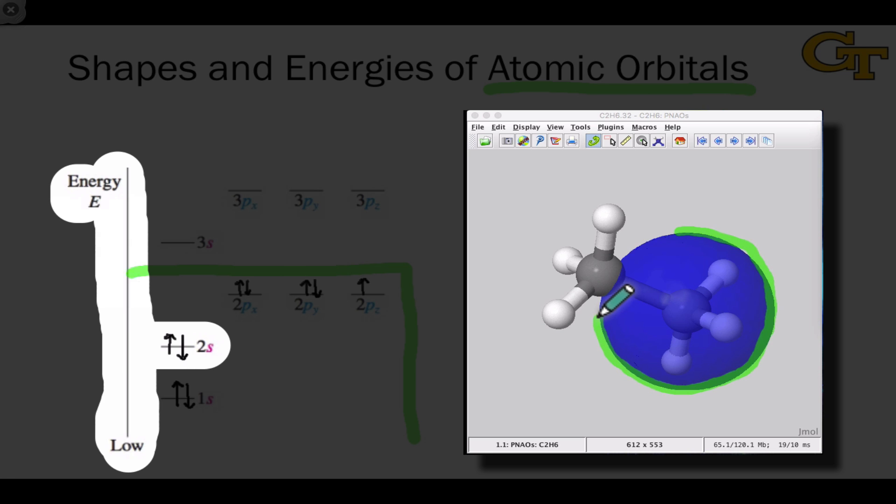And although you can't see it in this figure, there's a node at the center of the orbital as well. There's a change in sign that occurs inside the 2s orbital. The 2s orbital on carbon is getting so large that it's starting to interpenetrate the other carbon atom, which suggests that it's important for bonding, and it absolutely is. This is one of the valence orbitals of carbon.